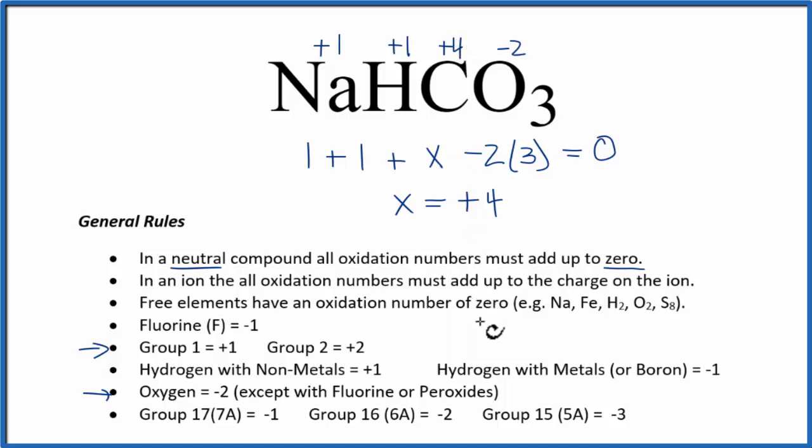So to recap, we found the oxidation numbers for the ones that we knew, and we used that in the fact that neutral compounds all the numbers add up to 0 to find the one we didn't know, the carbon. This is Dr. B with the oxidation numbers for NaHCO3, and thanks for watching.